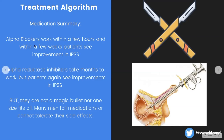Alpha blockers work within a couple of days to hours, while 5-alpha reductase inhibitors take months to really kick in and shrink the prostate.